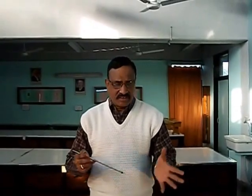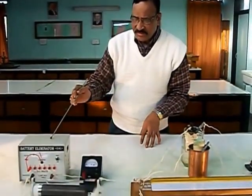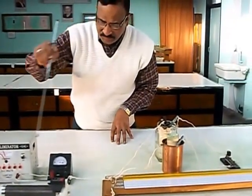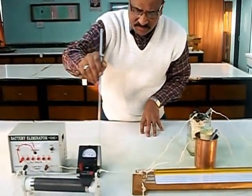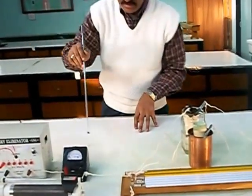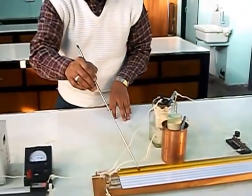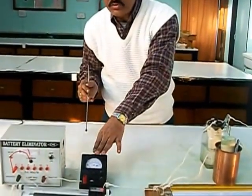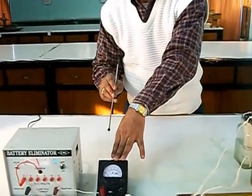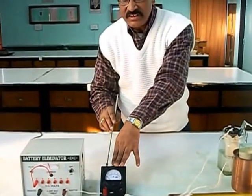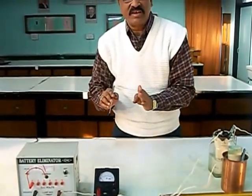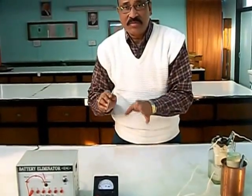Now let us understand the experimental setup. Here is the battery eliminator whose positive terminal is connected to the ammeter, going to point A. The negative terminal is connected with the rheostat, which comes to point B, providing the required potential gradient to the wire. The role of the ammeter is only to indicate that the current flowing in the circuit is steady; it has nothing to do with calculations. If there is any variation, it must be brought back to constant value so that the potential gradient remains constant throughout the experiment.